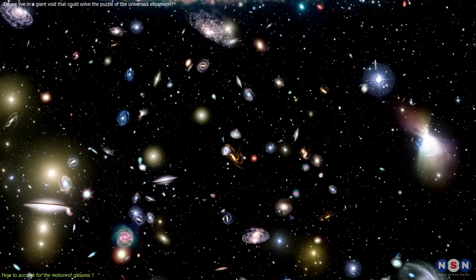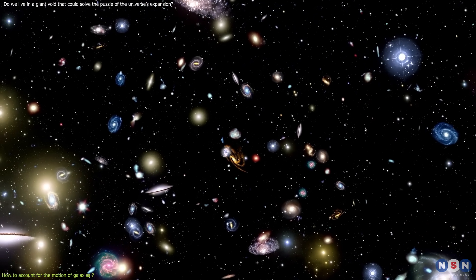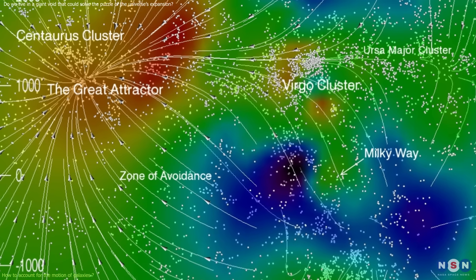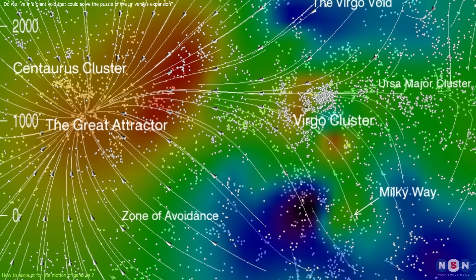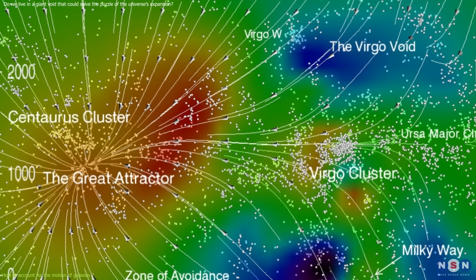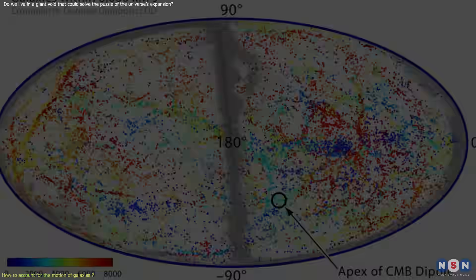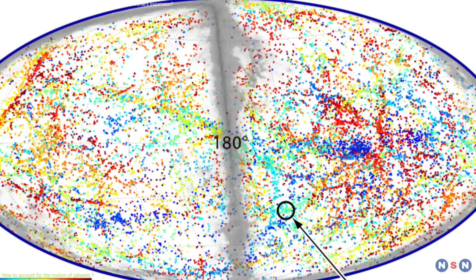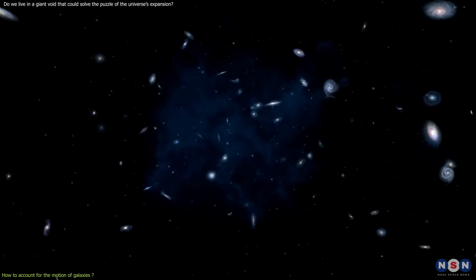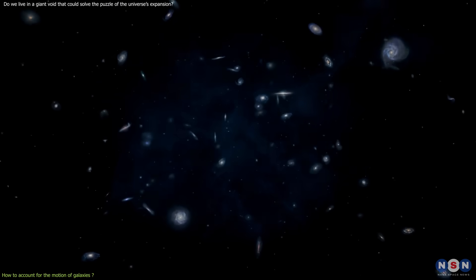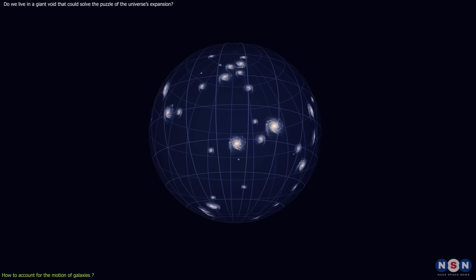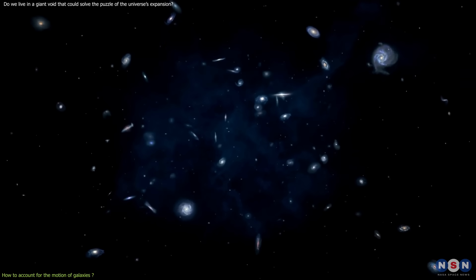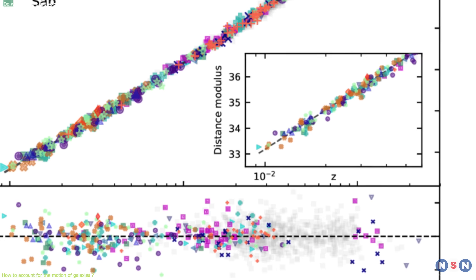So, how can we measure the peculiar velocities of galaxies? Well, one way is to use the Cosmic Flows 3 Catalog, which is the largest and most comprehensive catalog of galaxy distances and velocities, containing over 17,000 galaxies within 300 megaparsec from us. By comparing the observed velocities of galaxies with the expected velocities from the expansion of space, we can estimate the peculiar velocities of galaxies and correct for them in the supernova data.